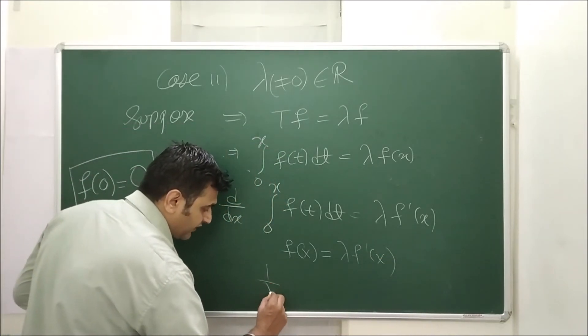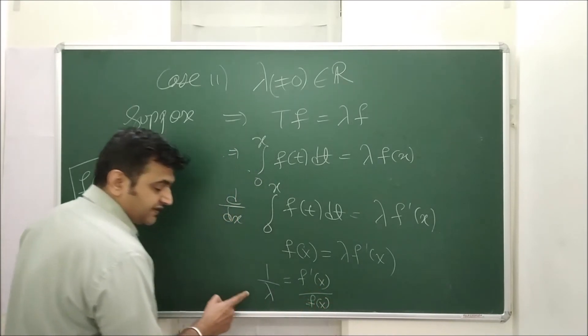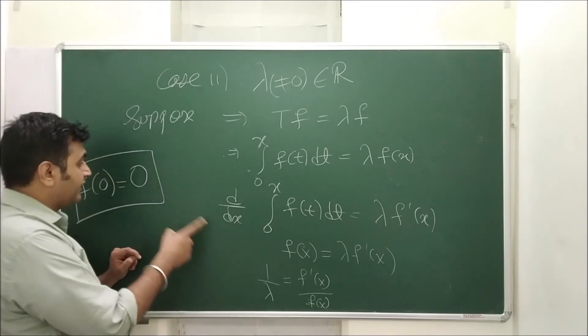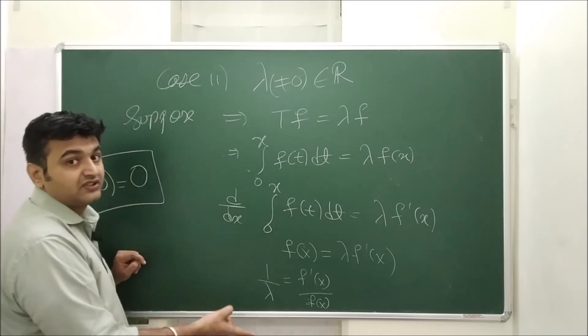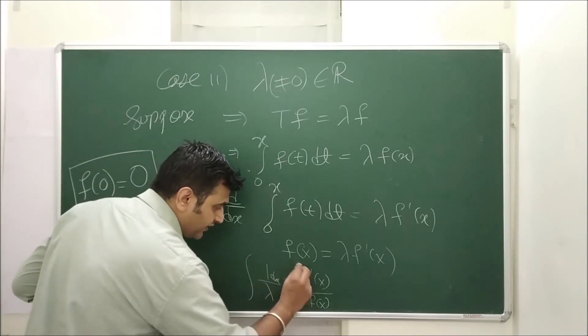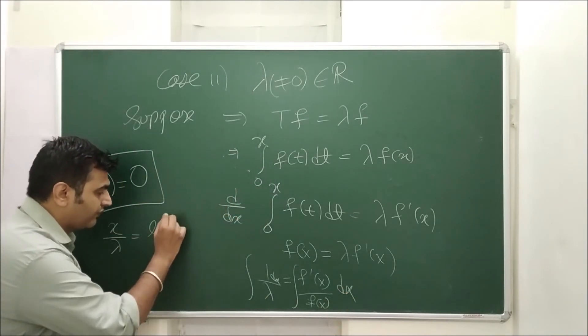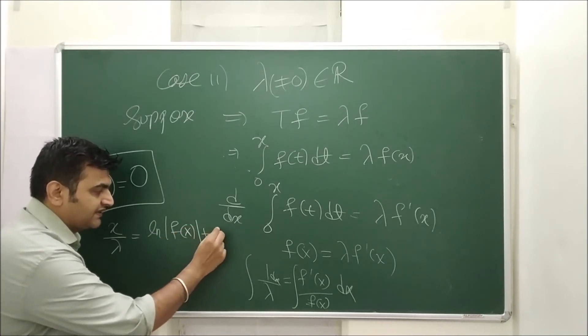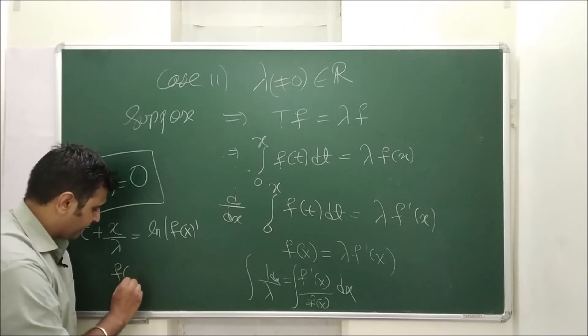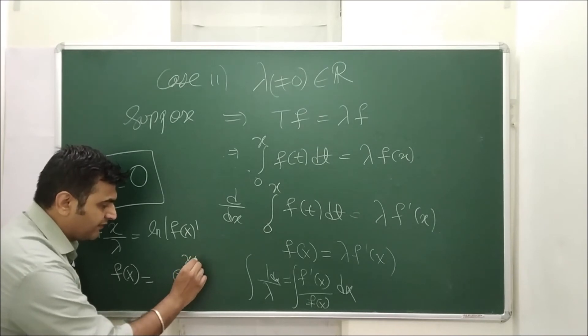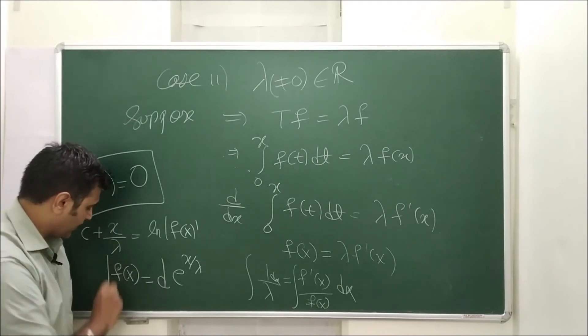Now if I do variable separable 1 upon lambda equal to f dash of x upon f of x. Here is the second time I am using that lambda is non-zero. Earlier we used lambda is non-zero for this condition and now I can divide by lambda because it is non-zero and now if I integrate both sides. What will I get? This implies x upon lambda is equal to log of mod of f of x plus c. So I can write plus c over here. Doesn't matter. And what is my f of x then? e raised to x by lambda plus c and then e raised to c I am calling some another constant d. So this is what I have.